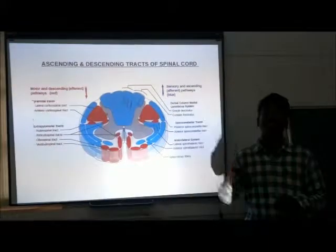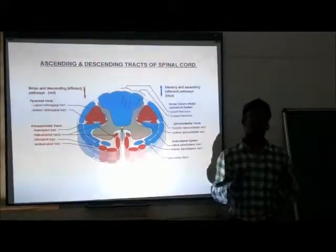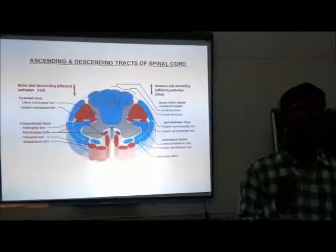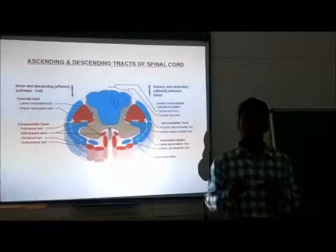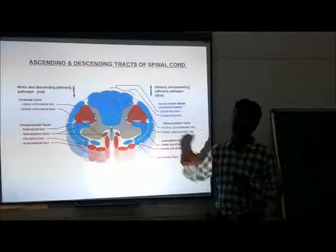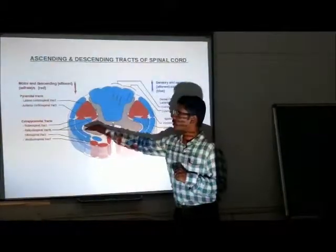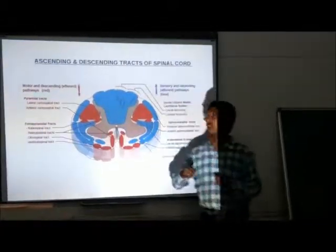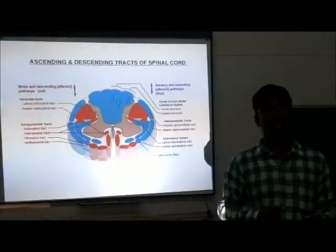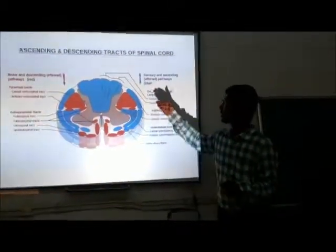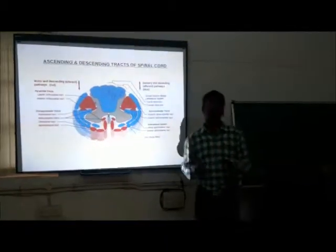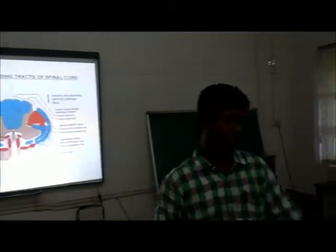The next one is the extrapyramidal system. The extrapyramidal system means this tract does not make any pyramidal decussation, that is why it is called the extrapyramidal tract. This tract is again divided into the rubrospinal tract, reticulospinal tract, olivospinal tract, and vestibulospinal tract. Now let me study about the first important system, that is the lateral spinothalamic tract.